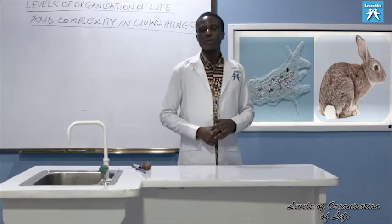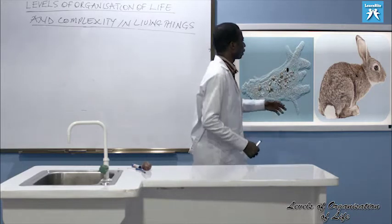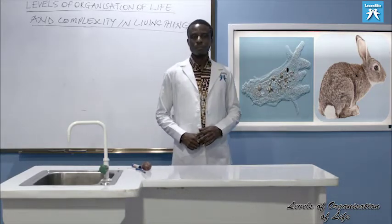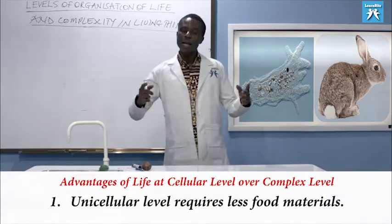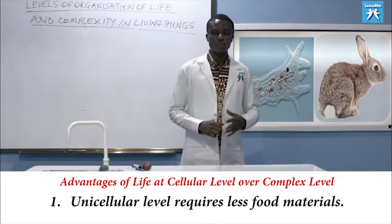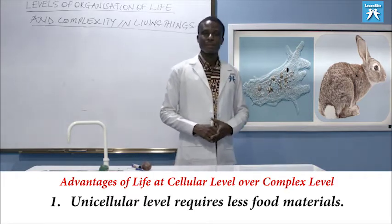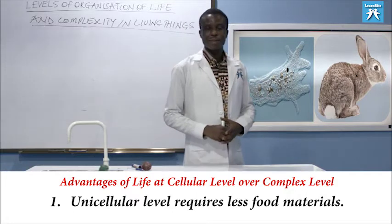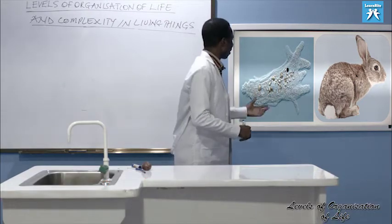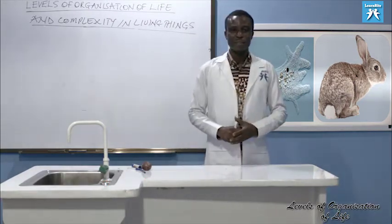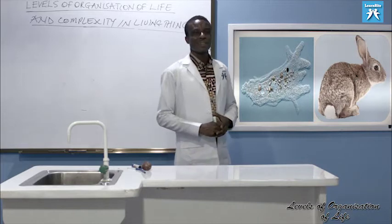Let's look at the advantages of life in an amoeba over that of rabbits. For instance, the first advantage: unicellular organisms require less food material. If you have to feed an amoeba versus a rabbit — even a small amount is more than enough for a thousand amoeba. But for rabbits, you know. So less food material is needed.